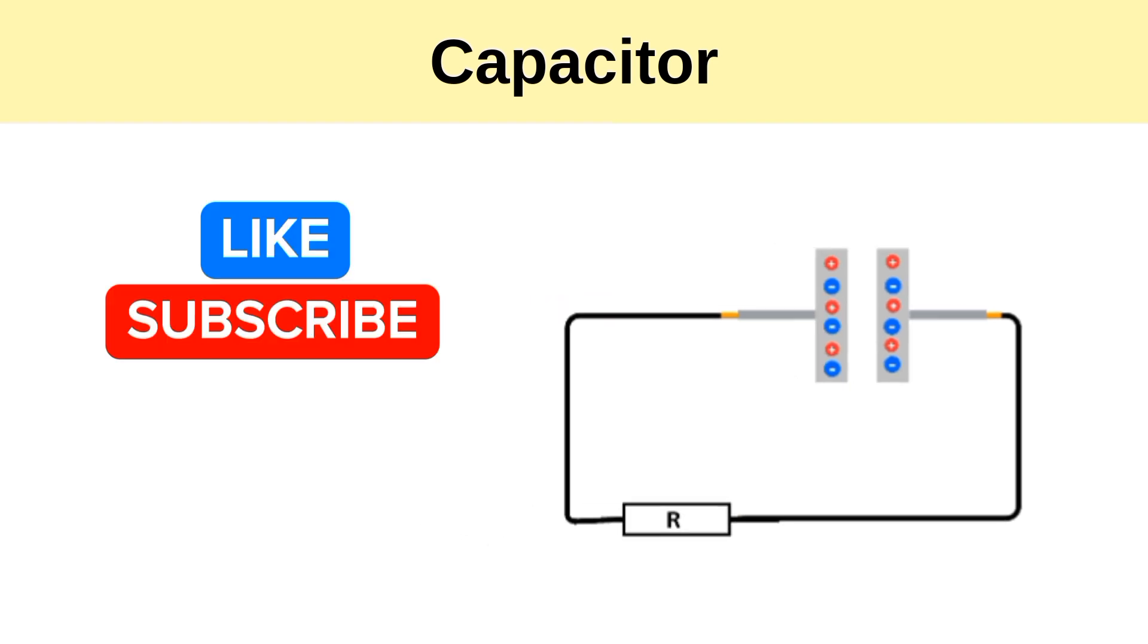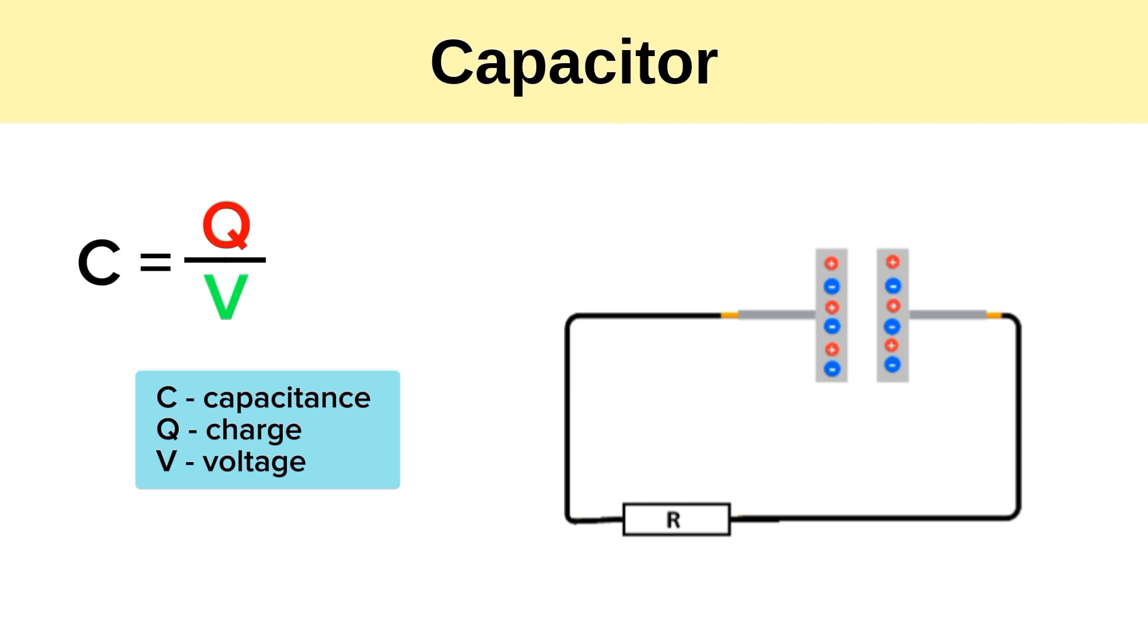Capacitors store electrical charge, which we call capacitance. The capacitance C is the ratio of the amount of charge Q on either conductor to the potential difference V between the conductors, or simply C equals Q by V. The SI unit of capacitance is Farad, named after Michael Faraday, although we will usually measure a capacitor in millifarads, microfarads, and picofarads.